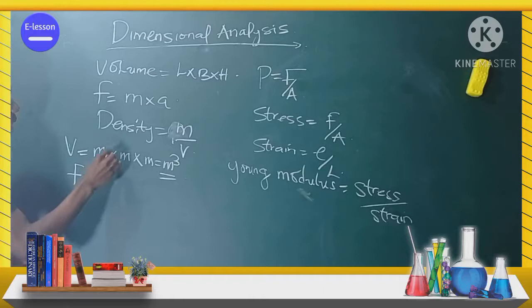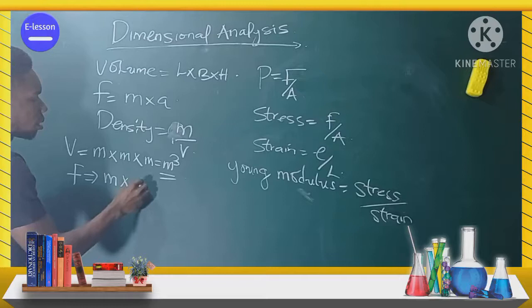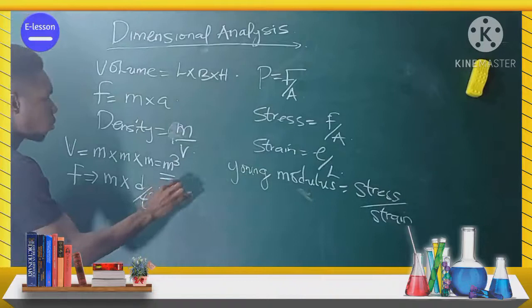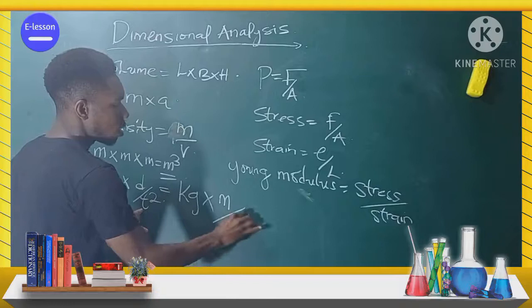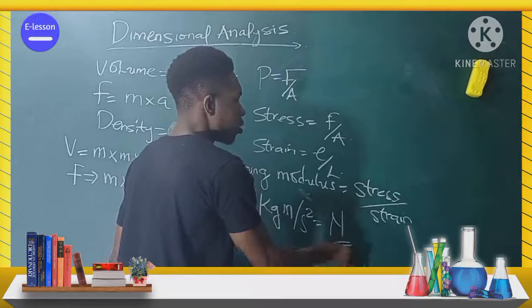Now for force: force equals mass times acceleration. Acceleration is displacement over time squared. The unit for mass is kg, the unit for distance is meter, and the unit for time is second squared. So we have kg·m/s², which is often represented in short form as Newton.